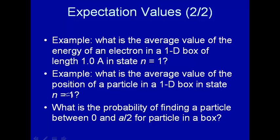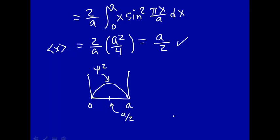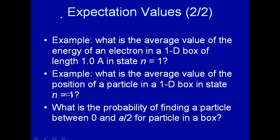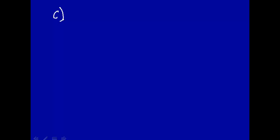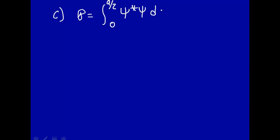Now, what's the probability of finding a particle between 0 and a over 2 for a particle in a box? The probability will be equal to the integral over the region from 0 to a over 2 of psi star psi d tau. If we went from 0 to a over the entire box, this integral would equal 1. But we're only going from 0 to a over 2, so we're expecting the answer to be one half.